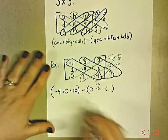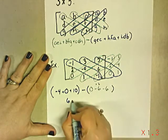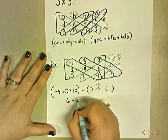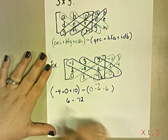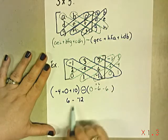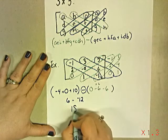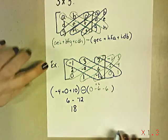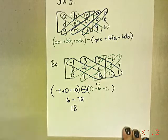Okay, negative 4 plus 10 is 6 minus negative 6 and negative 6 is negative 12. So 6 minus negative 12. You've got to be careful not to lose that guy. 6 minus negative 12 is a positive 18. So the determinant of this matrix is 18.